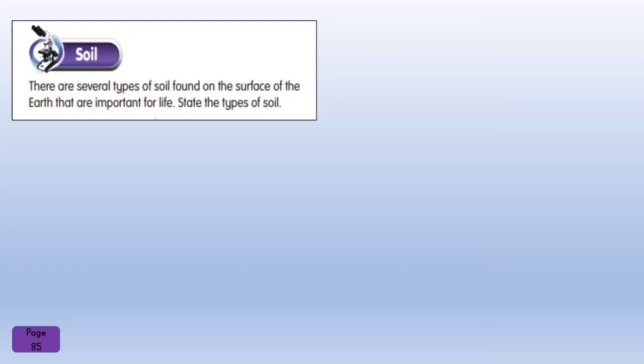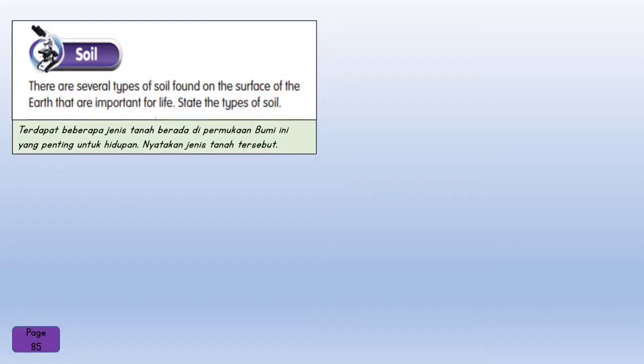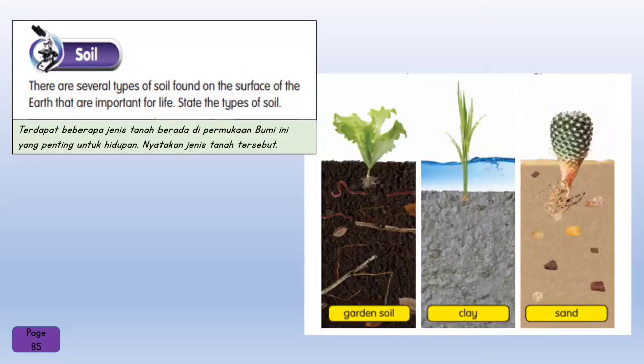Soil. There are several types of soil found on the surface of the earth that are important for life. The types of soil are garden soil, clay, and sand.